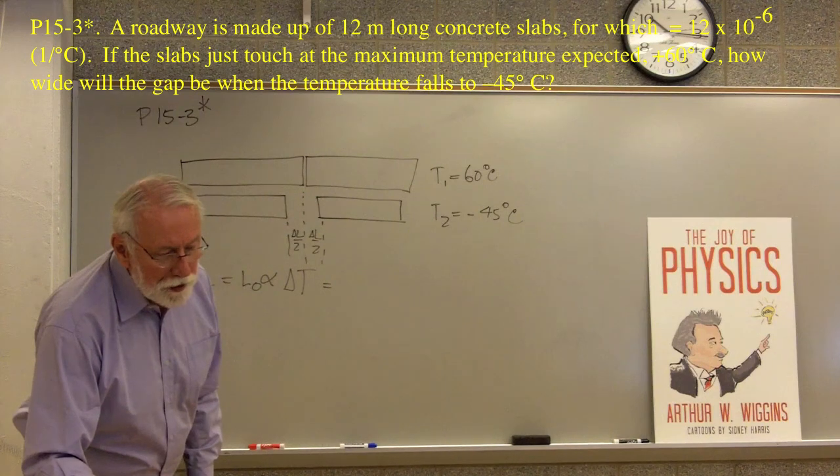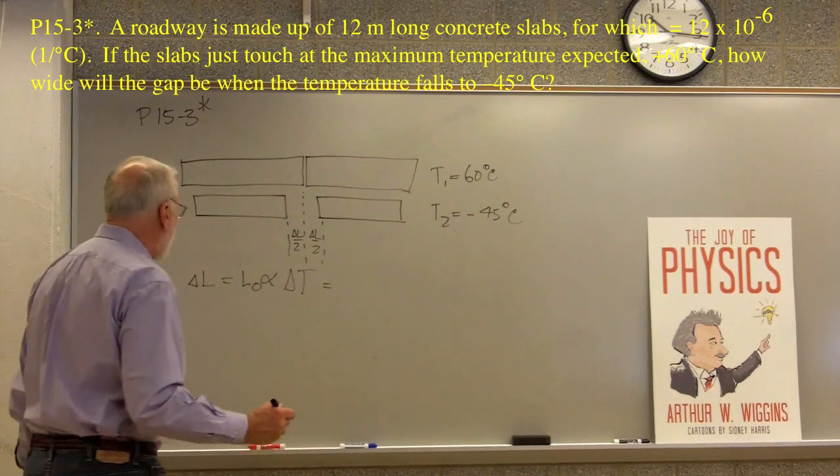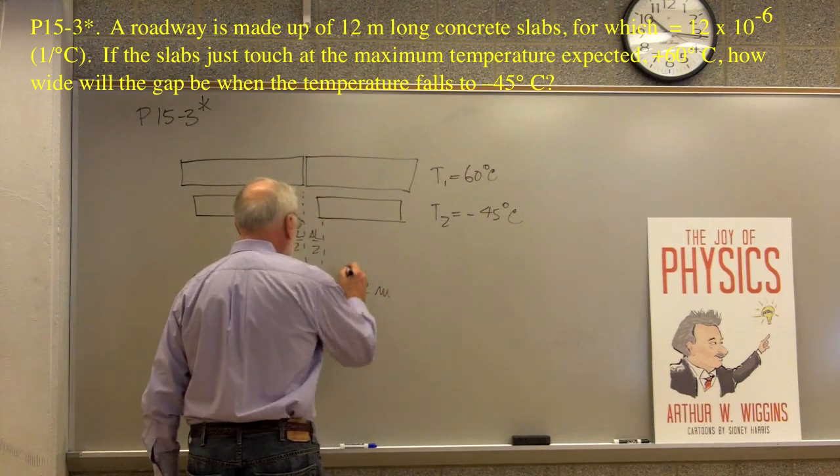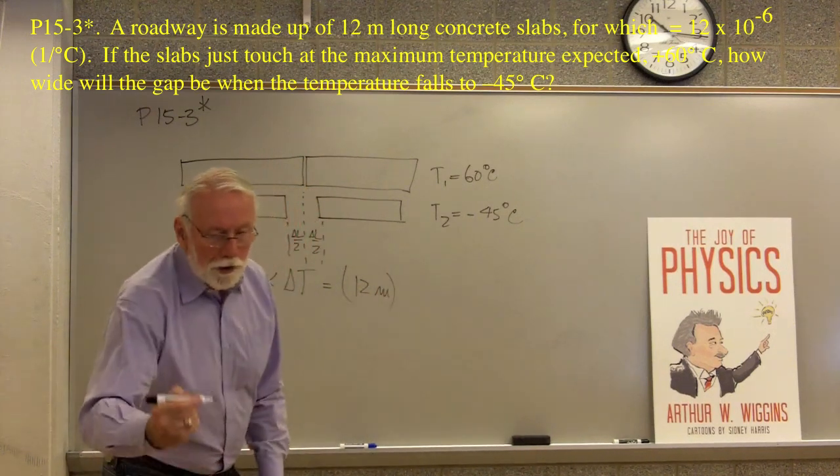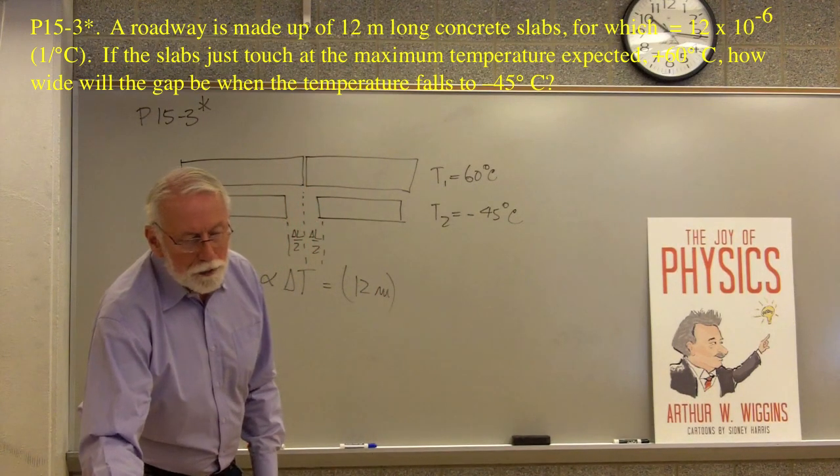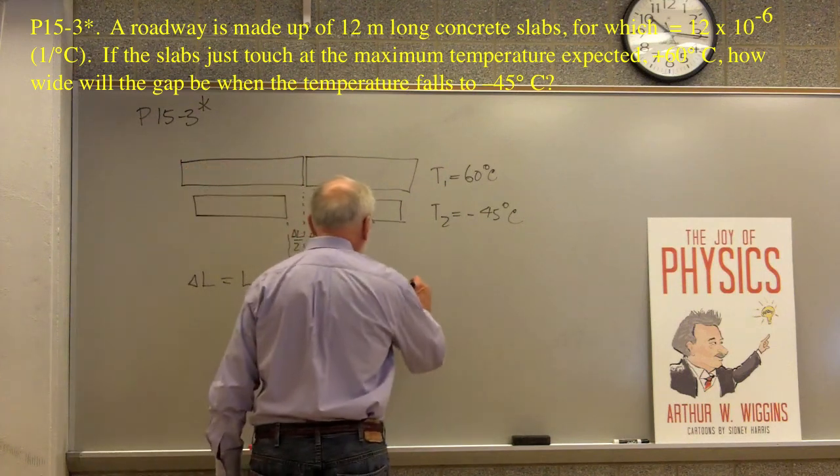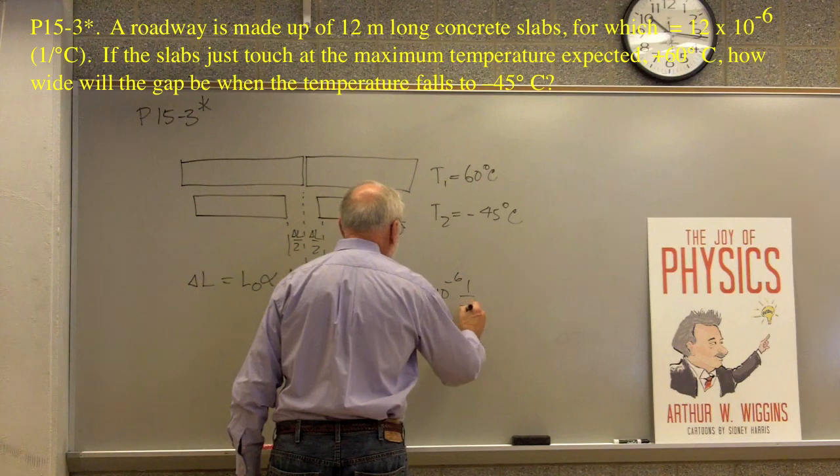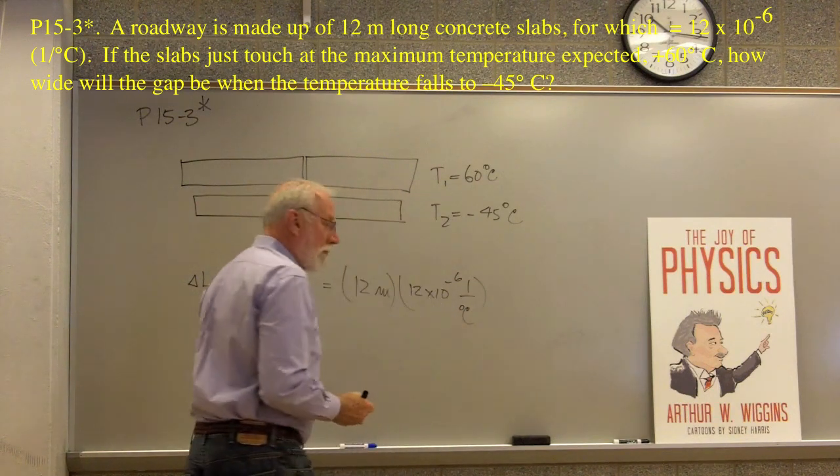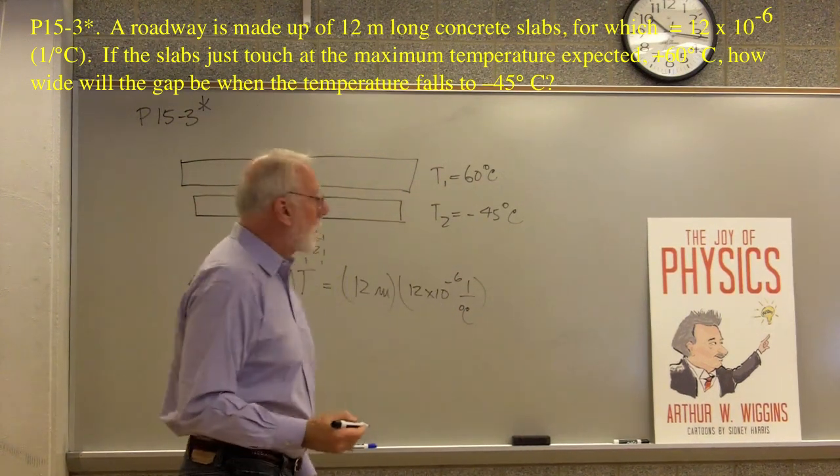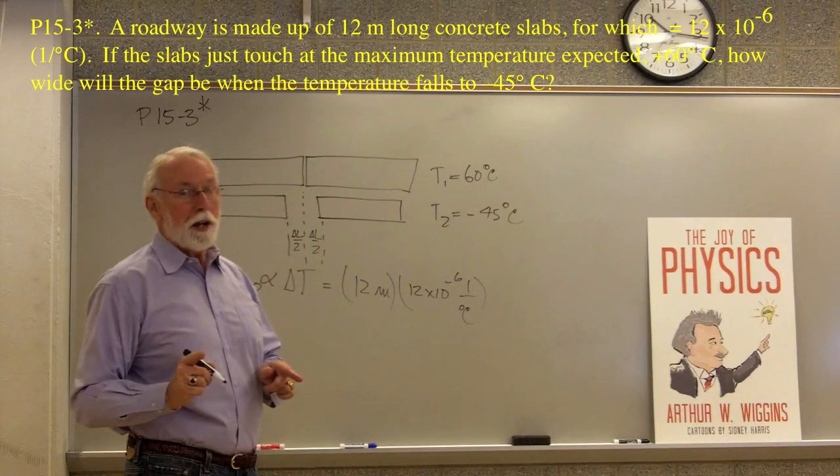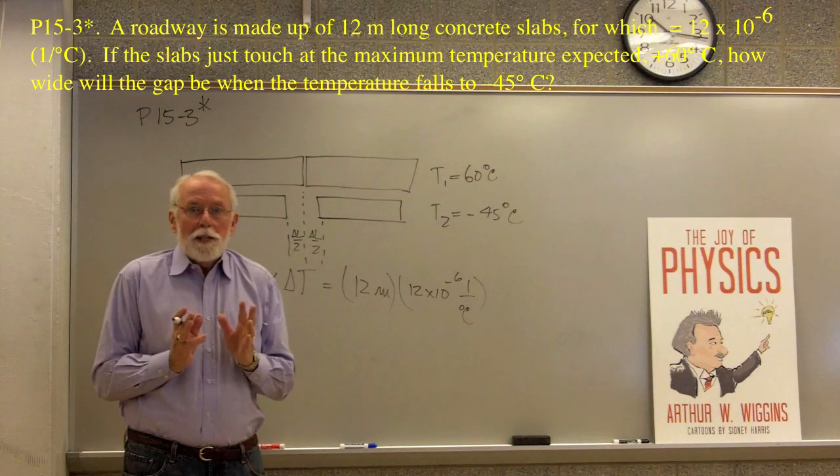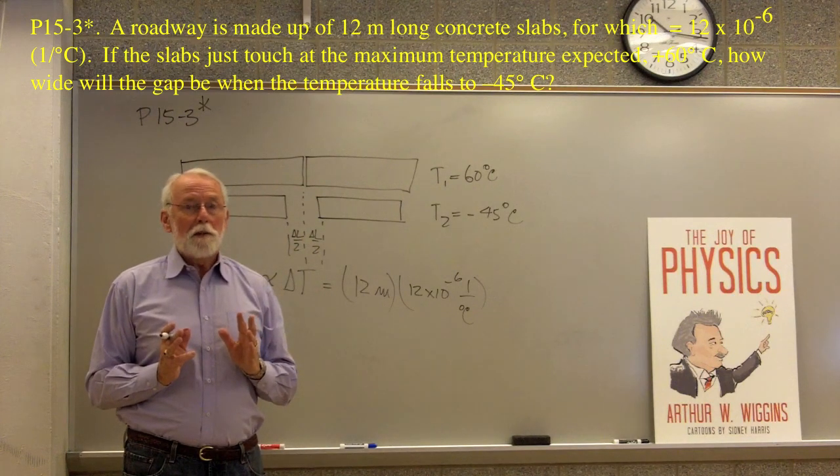L0, the problem says is 12 meters long. 12 meters times alpha, which it says is 12 times 10 to the minus 6, 1 over degrees C, multiplied by the delta T. So what's the delta T? Another one you've got to be careful of. Do you just take 60 minus 45 and say that the delta T is 15 degrees?